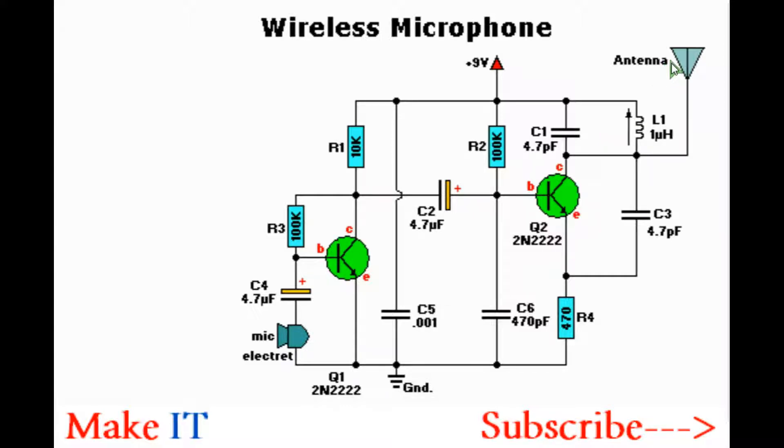For the antenna, you need to use a 20-inch bare copper wire connected at the collector of the transistor here. You can use a longer piece of wire to achieve more range.